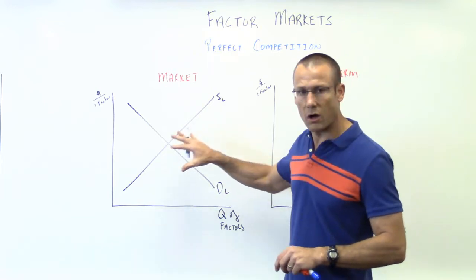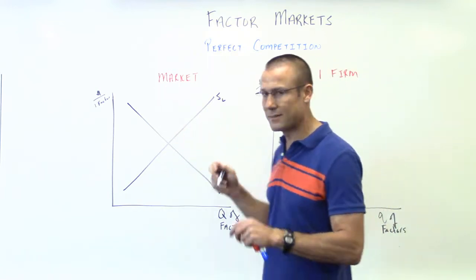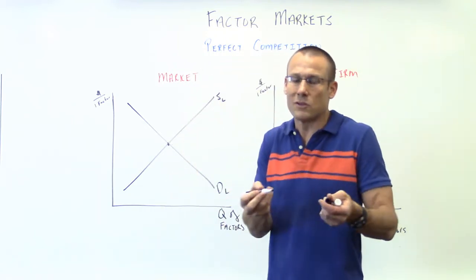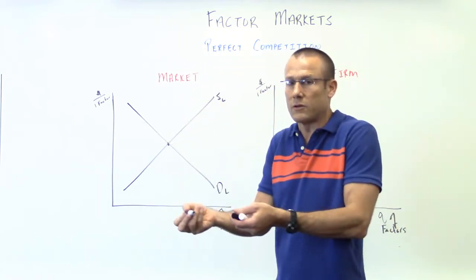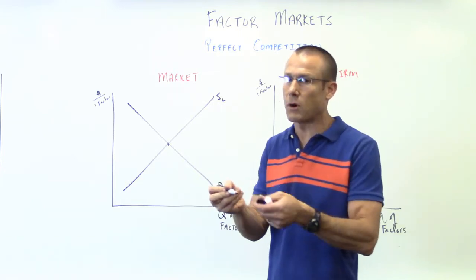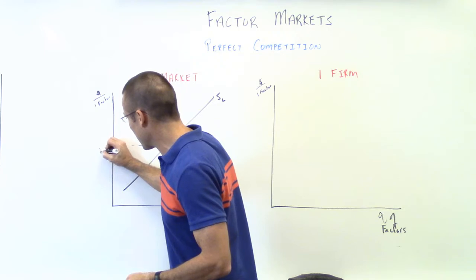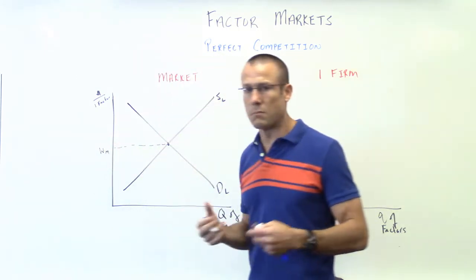Why do we need to draw this graph on the left? The same reason in the product market. The market sets the price, but now I'm not going to use the word price. I'm going to use the word wage. Wage is just the price of labor. So the market is going to set the wage. Wage M. That's the market wage.